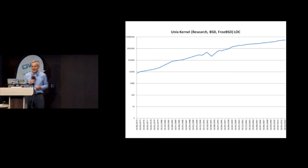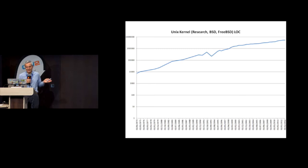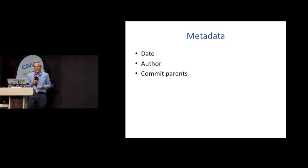This graph shows the increase in source code size of the kernel: it has increased 1,000-fold from the 1970s until today, from less than 10,000 lines to a few million lines today.